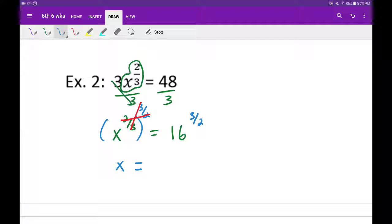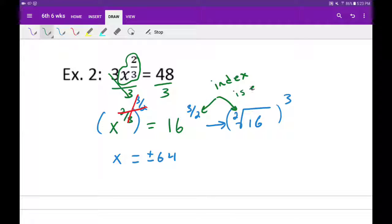16 to the 3 halves power is going to be 64, but we've got to be careful because this is going to be plus or minus 64. Okay, reason being is we've got to watch out for that 2 on the bottom, that's our index. So if we were to convert this, this would be root 2, 16 to the 3rd power. Those 2s, that's our index, and we need to watch for them being even. Okay, we have even powers, we've got to put plus or minus, but nonetheless, this is our answer.